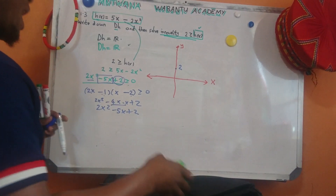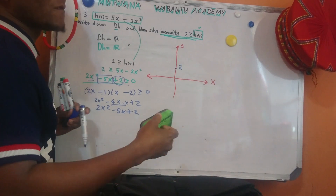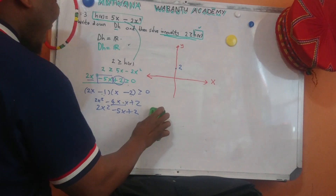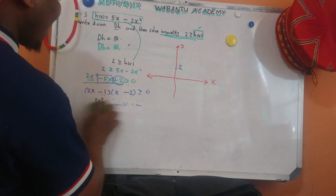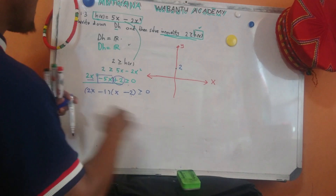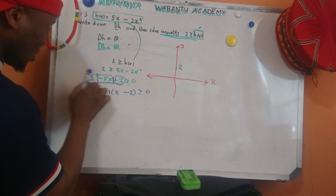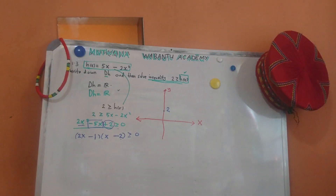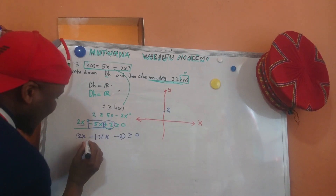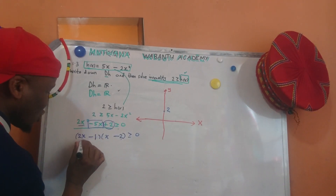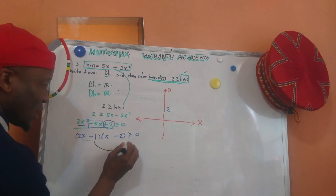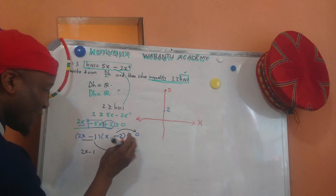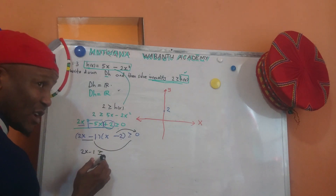If you don't know factorization, please let me know and I can make a video. If you watch my other videos, of course you'll find I have factorization covered in detail. So now, factorizing 2x squared minus 5x plus 2 gives us the factors (2x minus 1)(x minus 2). So either 2x minus 1 is greater than or equal to zero, or x minus 2 is greater than or equal to zero — with the greater than or equal sign from our inequality.